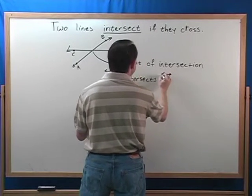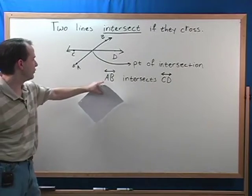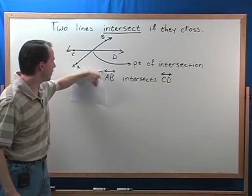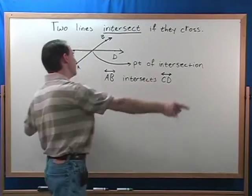So if you remember back to the previous section, the way you write a line is you put the two points that the line goes through, and you put this double arrow over the top showing that it goes on and on both directions.